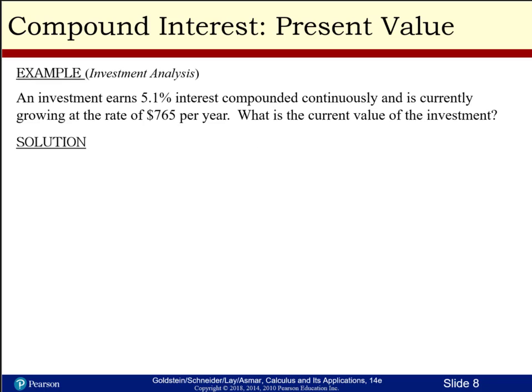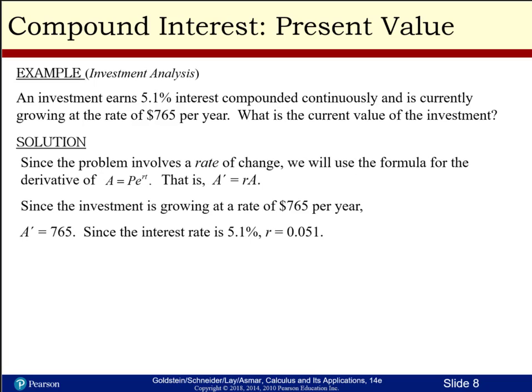For an investment analysis example: we have an investment earning 5.1% interest compounded continuously, and it's currently growing at a rate of $765 per year. What's the current value of the investment? You know you've got to write down PERT.